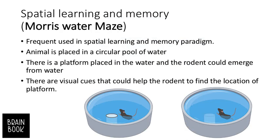The first one is the Morris water maze. It is frequently used as a spatial learning and memory paradigm for rodents. The animal is placed in a circular pool of water and there is a platform placed in the water. The rodent is motivated to emerge from the water because rodents and mice do not like to be in water.